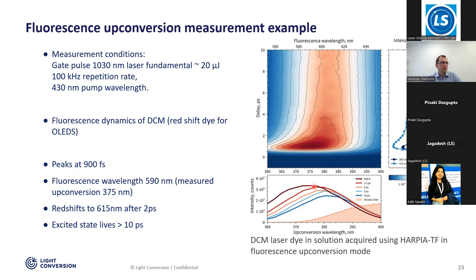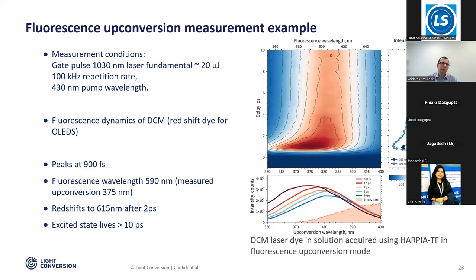You can also see that the upconversion wavelength we measure is around 375 nm. We use a calculator to verify the fluorescence wavelength. The measurement has very good temporal resolution, and you can see the redshift which happens over time. Initially the majority of the absorption peak is at 590 nanometers, but after about two picoseconds it redshifts to around 650 nanometers. After that everything happens relatively slowly.